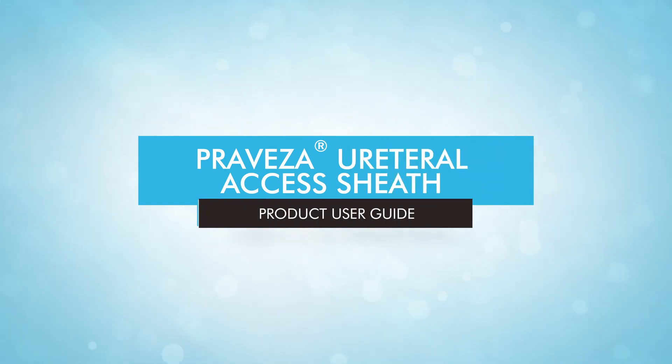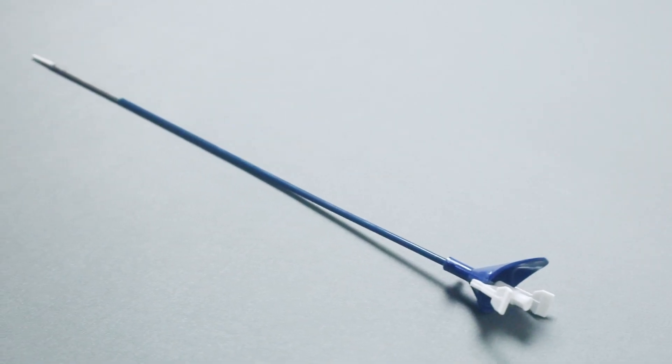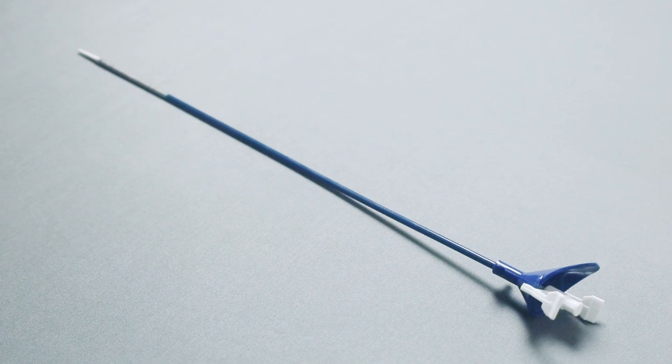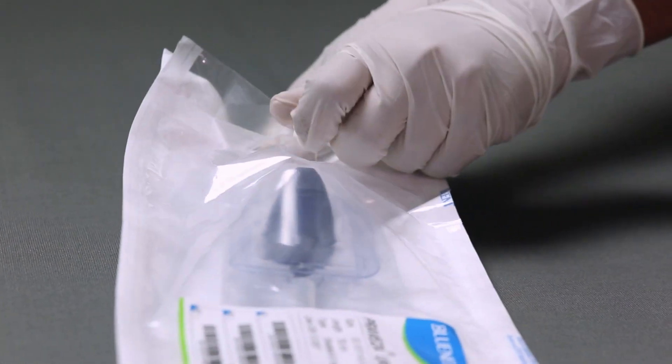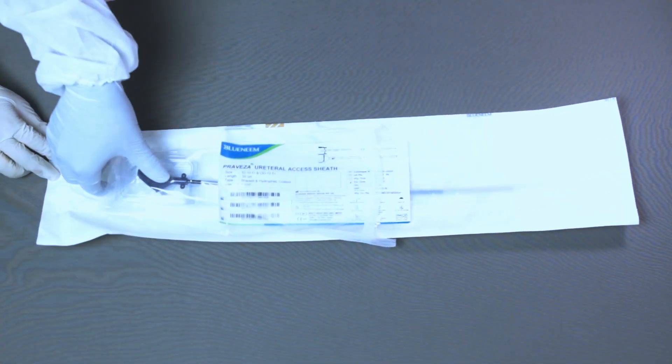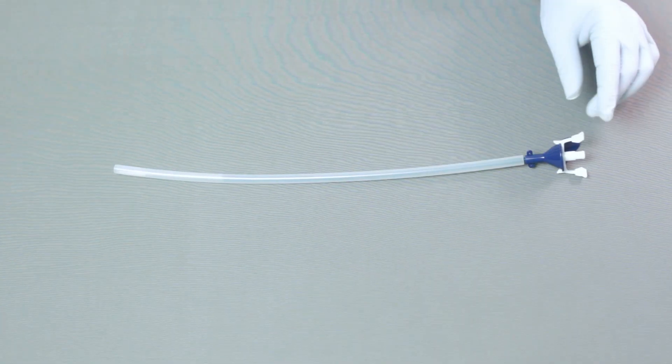The ureteral access sheath is intended to be introduced into the ureter to function as a dilator. It is used to establish a conduit during endoscopic urological procedures, facilitating the passage for ureteroscope or endoscope and other instruments into the urinary tract.